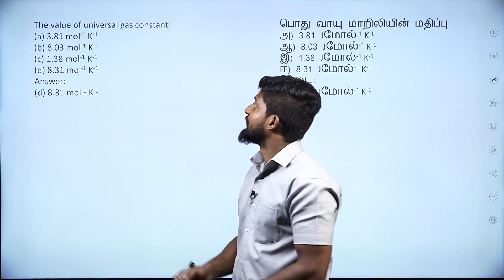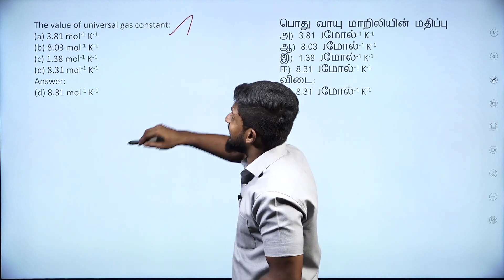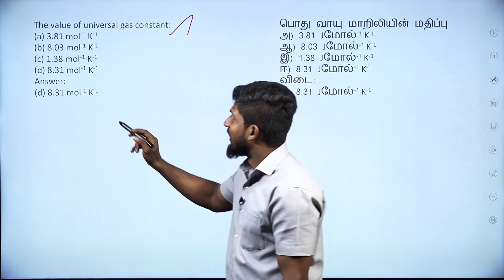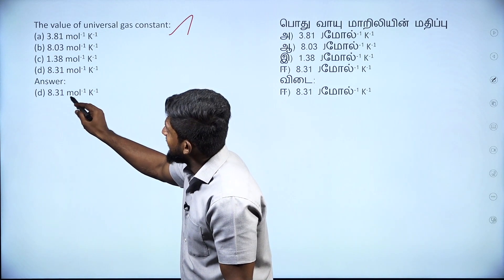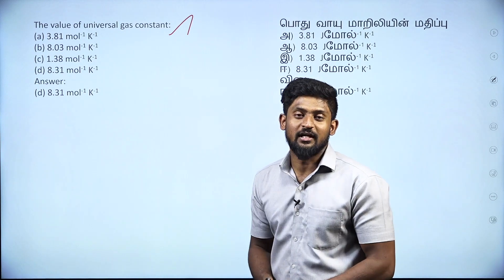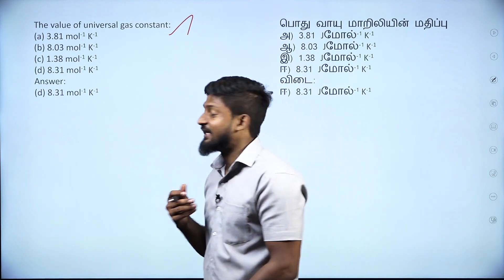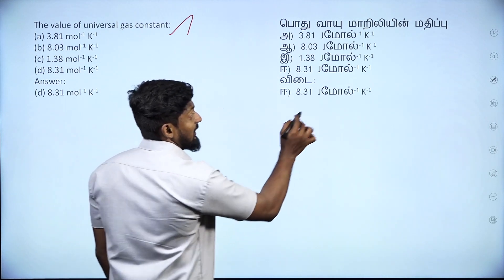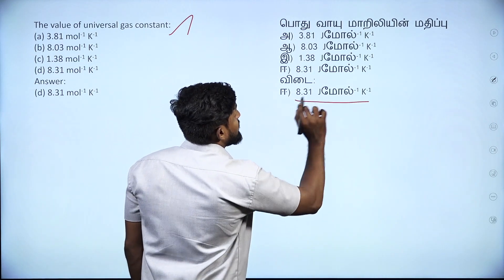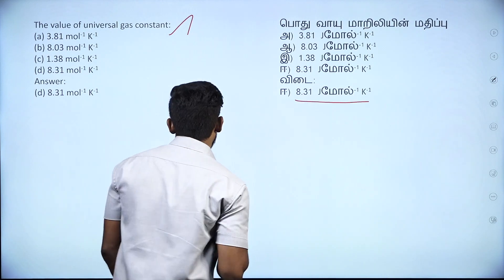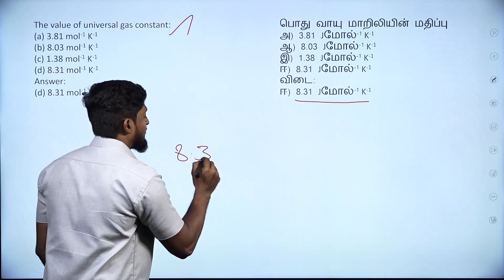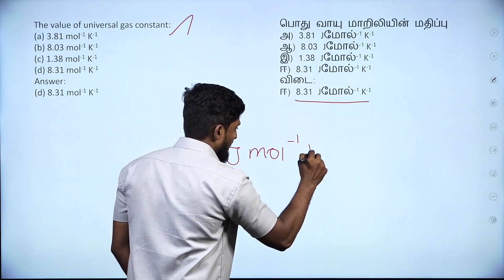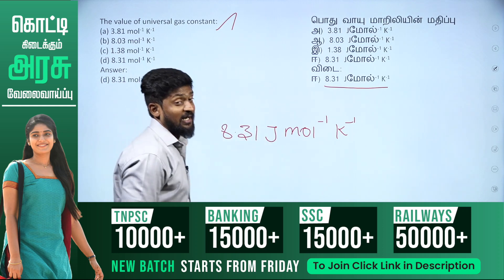First question: the value of universal gas constant. Let's talk about the value of universal gas constant. That is J mol inverse K inverse. That is 8.31 J mol inverse Kelvin inverse. Okay, this is my answer.